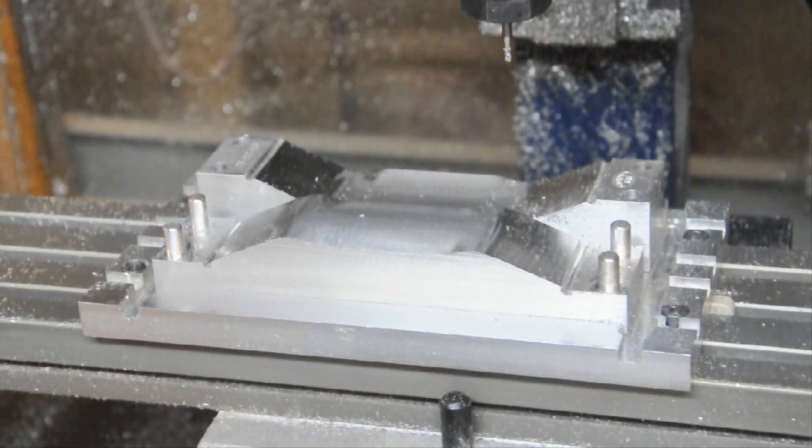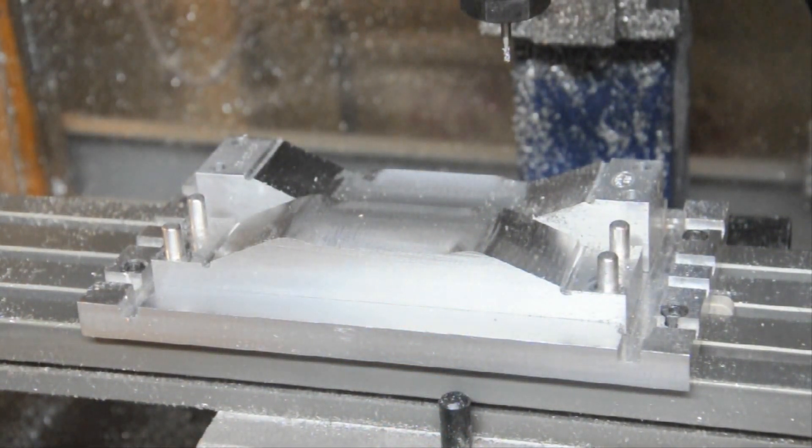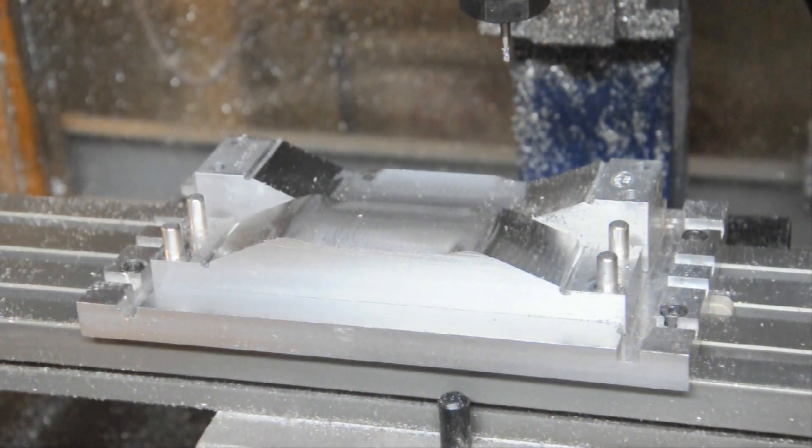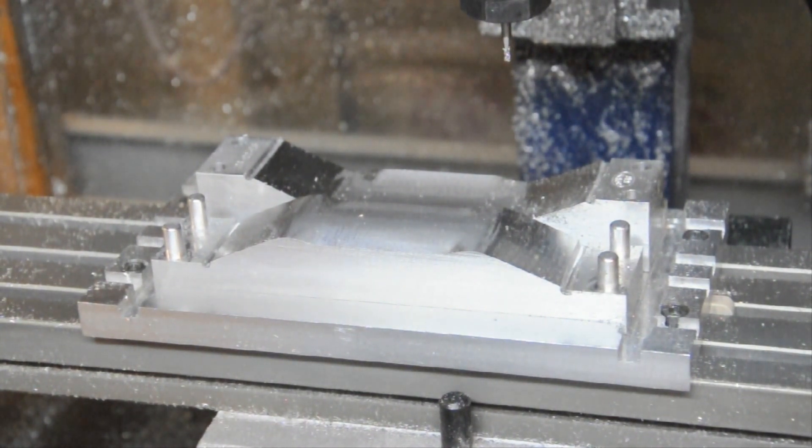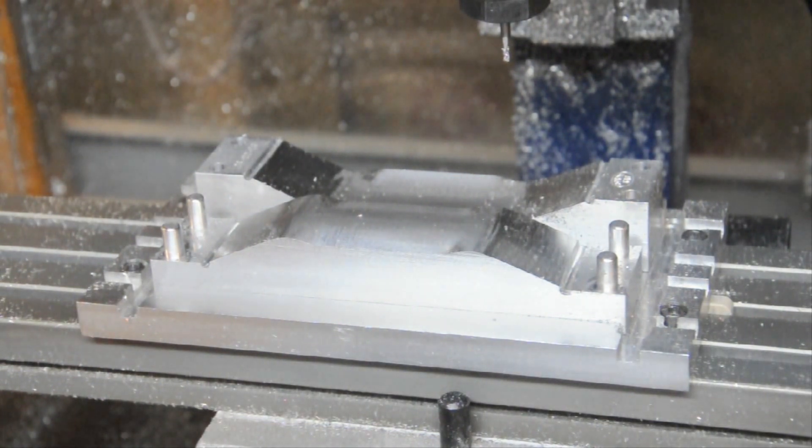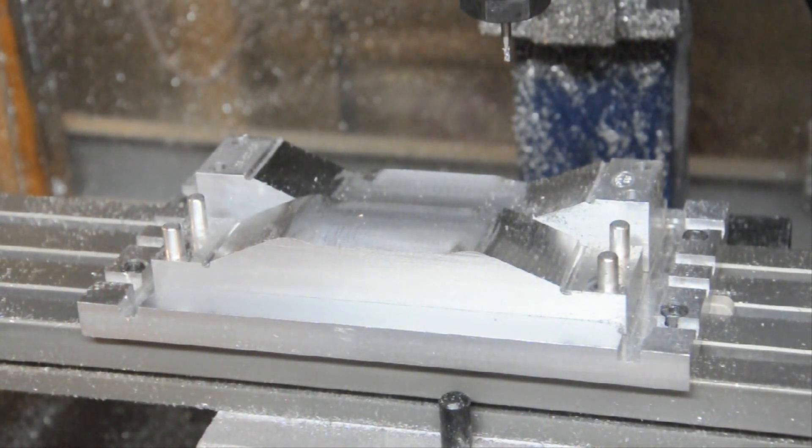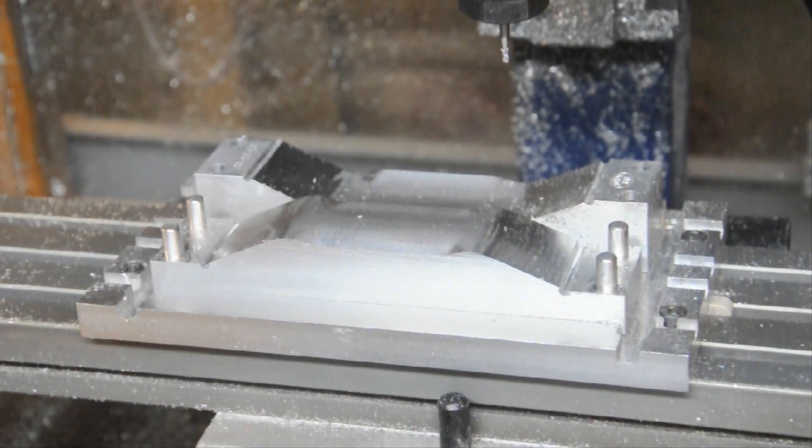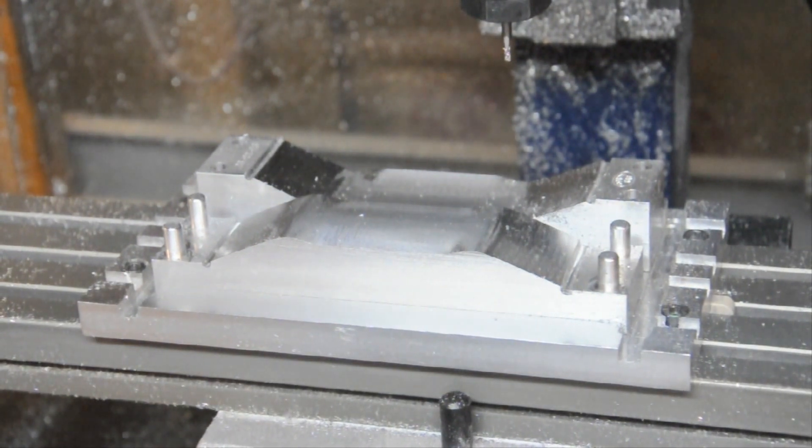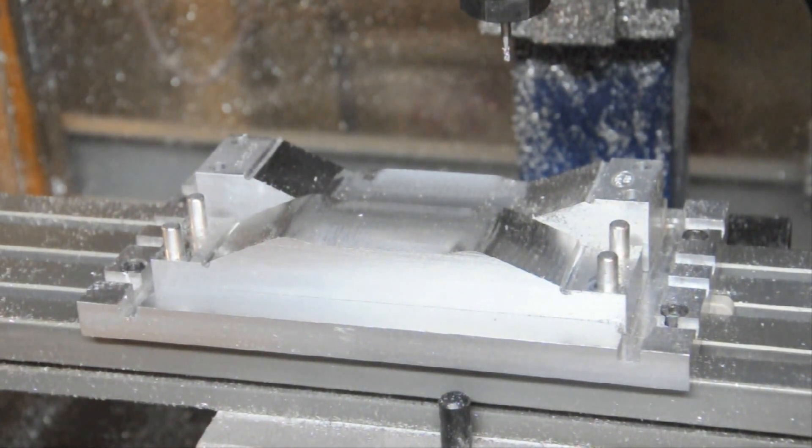What started out with two solid blocks of aluminum are now a completed mold. That took about six hours of machining time, and I think it was sixteen different operations. We had to change the cutters from as small as one-thirty-second to as big as a one-quarter inch cutter. So it's a pretty involved operation. Takes some serious time.